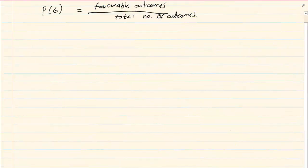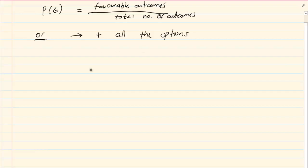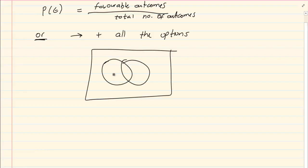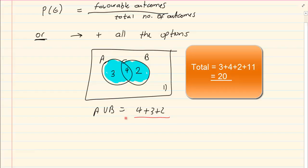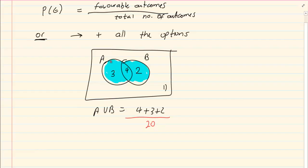From previous work we know that probability is the favourable outcomes over the total number of outcomes. We also know that when working with the word OR, we add all the options. For example, with a Venn diagram with 3 in the first and 4 in the second — the probability of A or B would be 4 plus 3 plus 2 over 20. So when we use the word OR, we take all the options, which means in other cases we use the concept of plus.